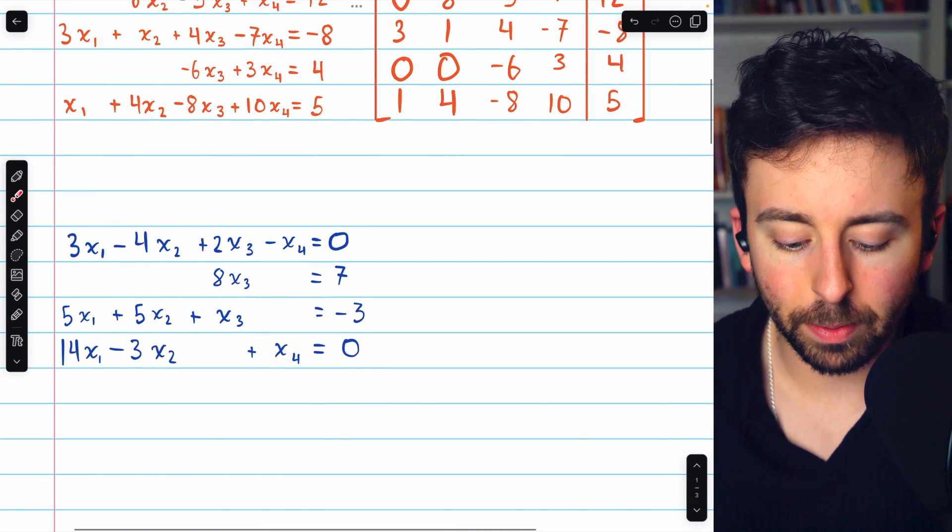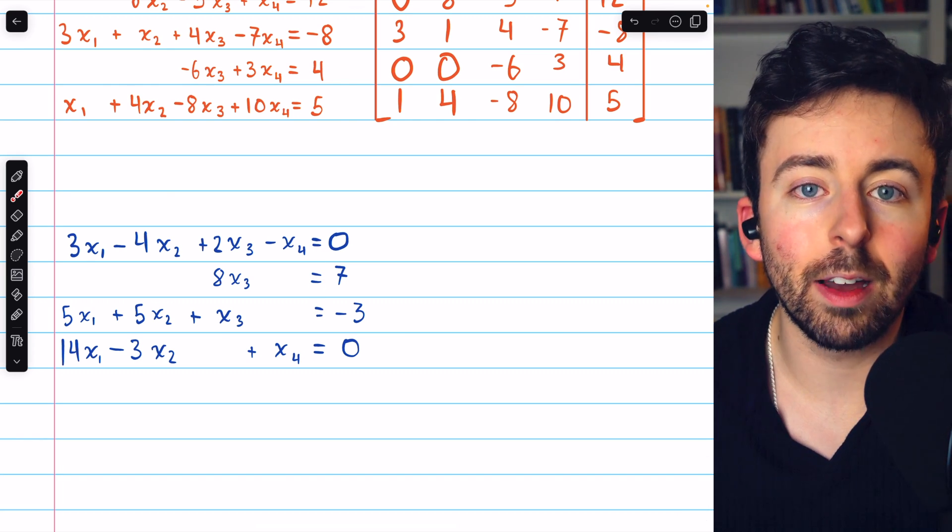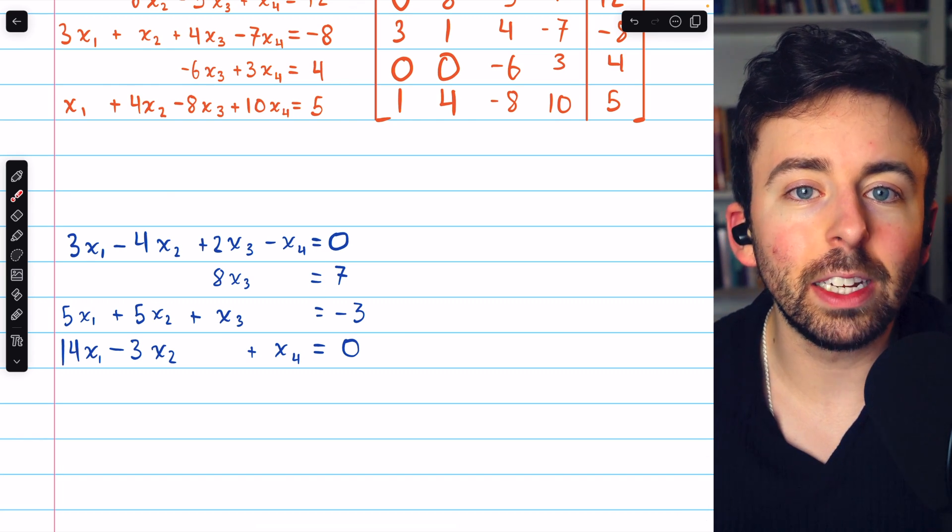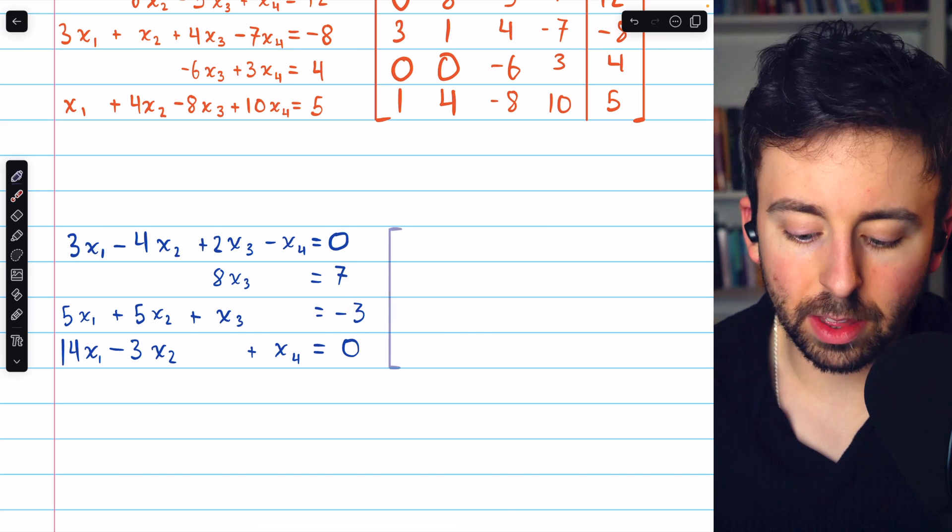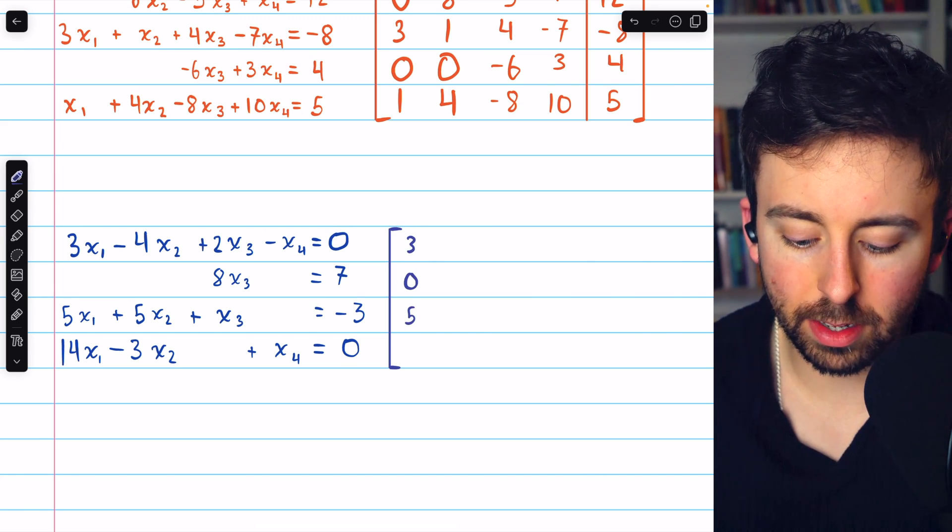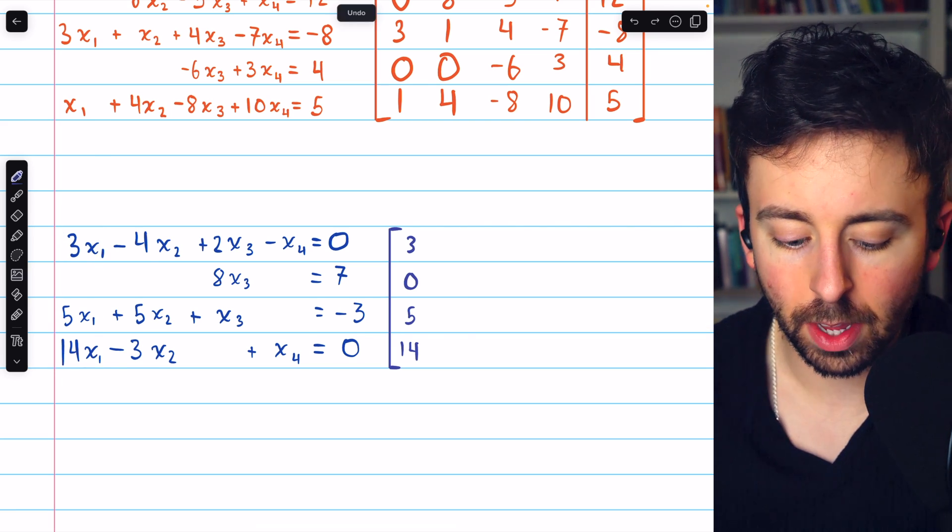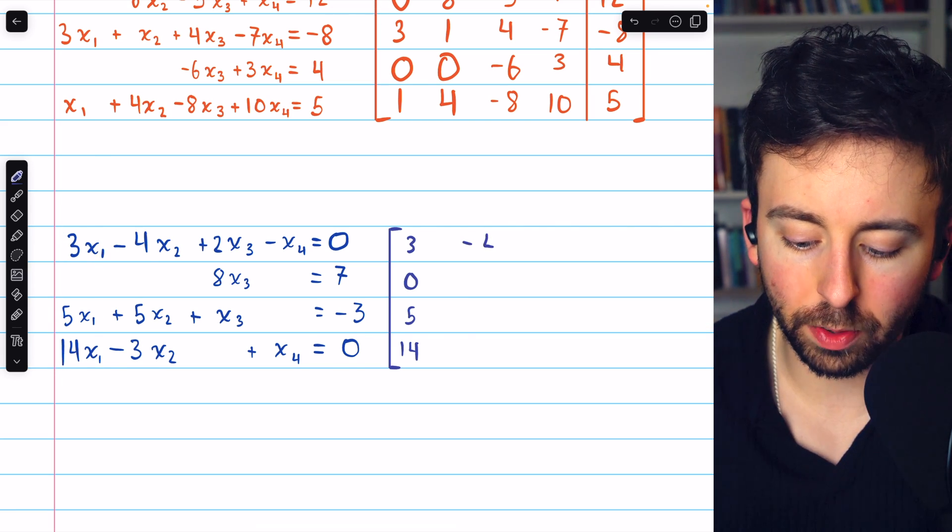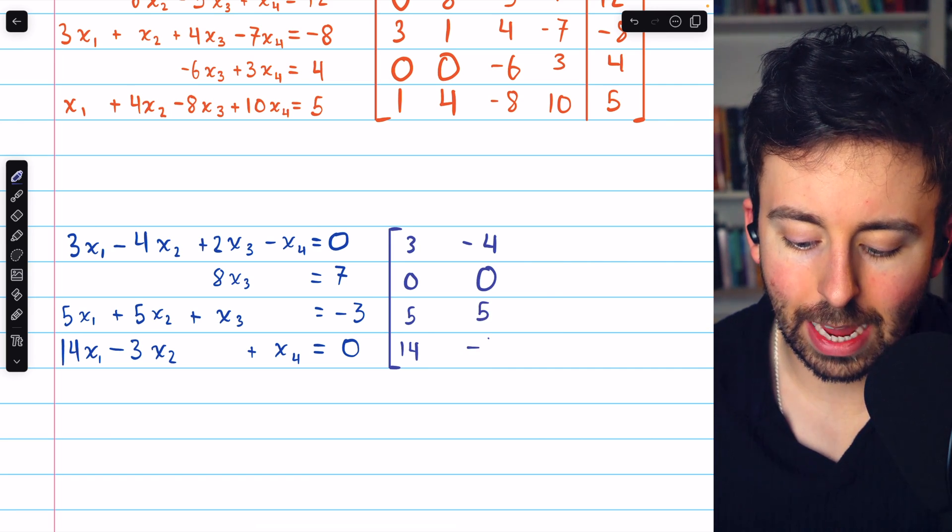Let's do one more example. Again, we have four equations, so our augmented matrix will have four rows, and it will need five columns. One for each of the four variables, and one for the constants. In the first column, I put the coefficients of x1, which are 3, 0, 5, and 14, going down the equations. In the next column, I put the coefficients of x2, negative 4, 0, 5, and negative 3.